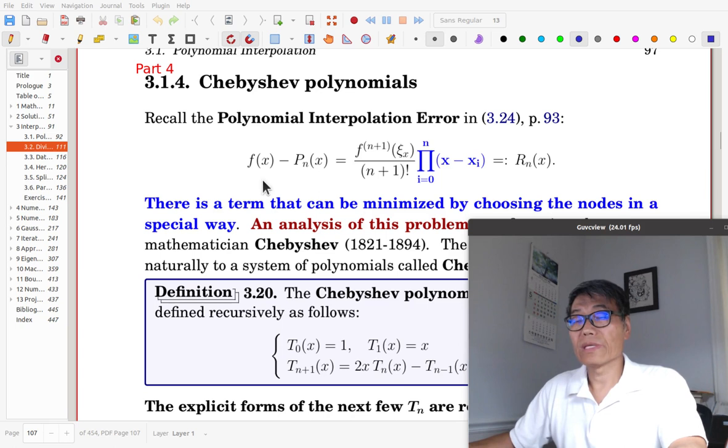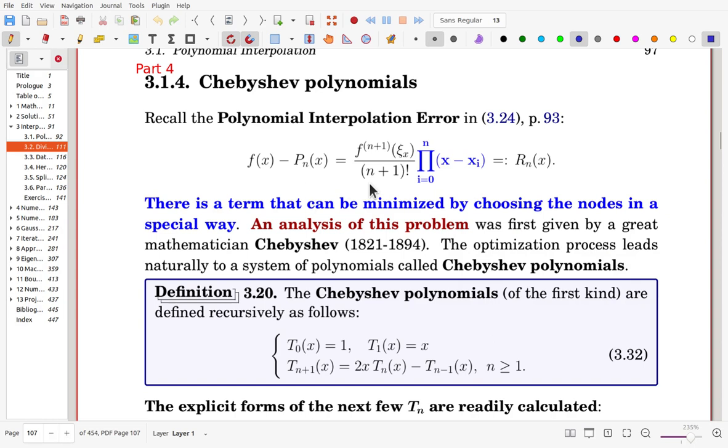If a function is interpolated by an n-degree polynomial at n plus 1 distinct points, then the error can be formulated in this way. Once this term is small, then error is small. So for these terms, we can minimize by choosing nodal points such that this product is as small as possible. An analysis of this problem was first introduced by Chebyshev, and the optimization process leads naturally to a system of polynomials called Chebyshev Polynomials.